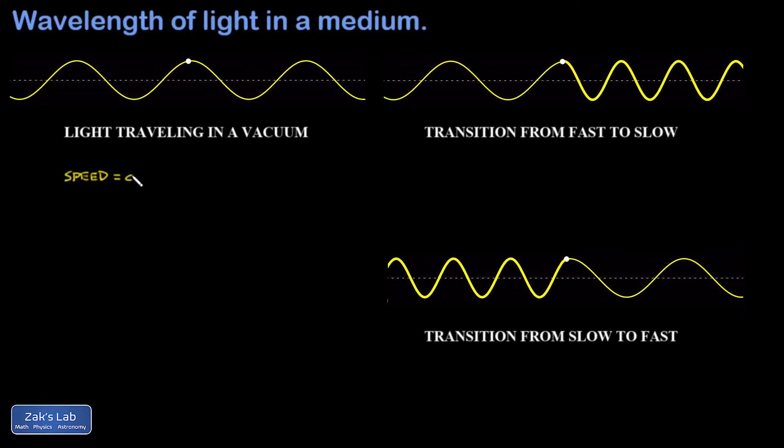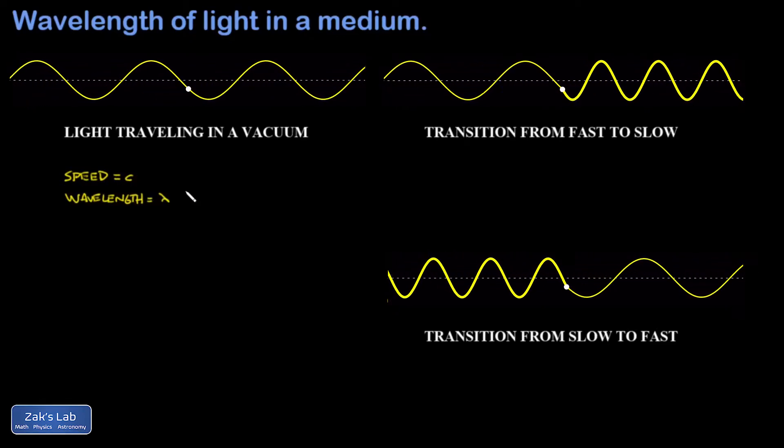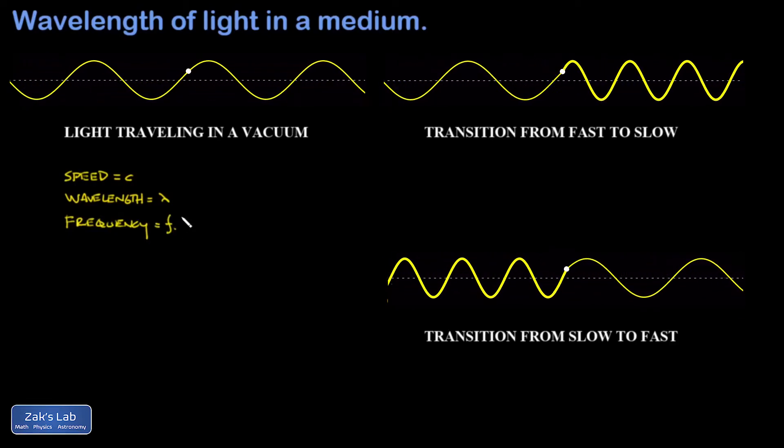So we can write down for light traveling in a vacuum, the speed is equal to C, the speed of light. The wavelength is lambda. For frequency, we'll use F.